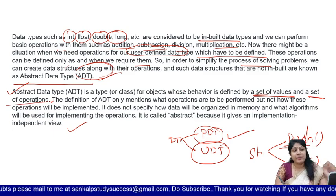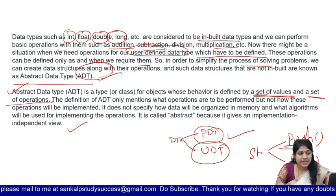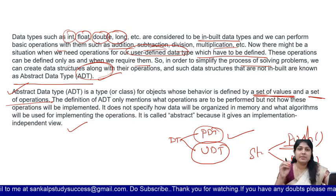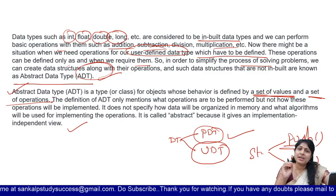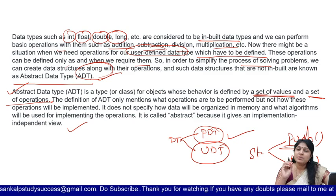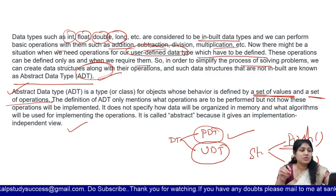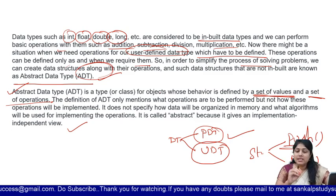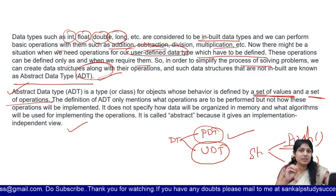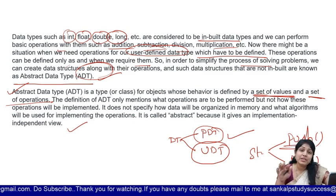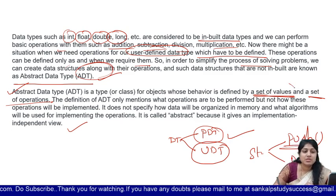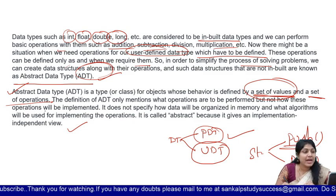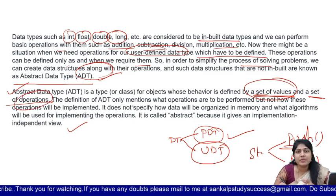ADT is a type, a class, or for objects. In Java, we have the concept of class and object, where an object is an instance of the class. Each object has a state and behavior. That depends on what set of values we define — those operations and behavior defined by the values and set of operations.